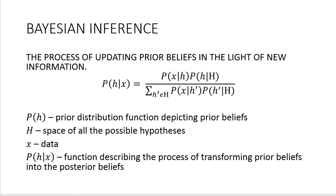Generally it's described by this formula where p(H) stands for prior distribution describing prior beliefs, H stands for the space of all available hypotheses, x stands for data, and p(H|x) stands for the function describing the process of transforming prior beliefs into posterior beliefs in the light of new information. You don't have to learn this formula by heart — you only need to understand how Bayesian updating works.